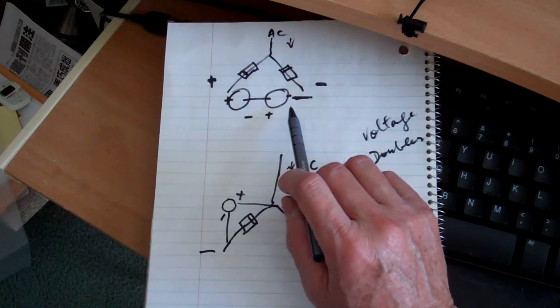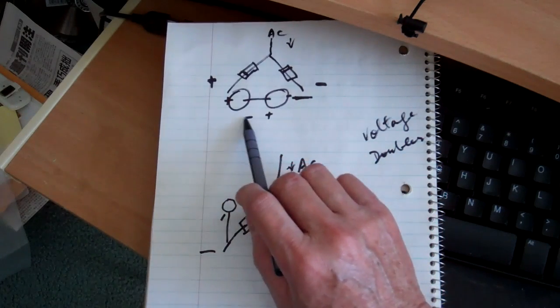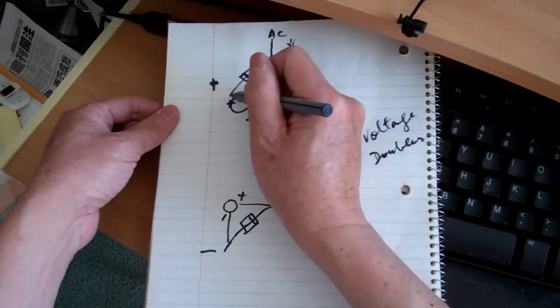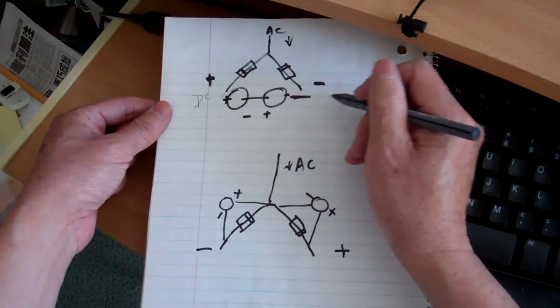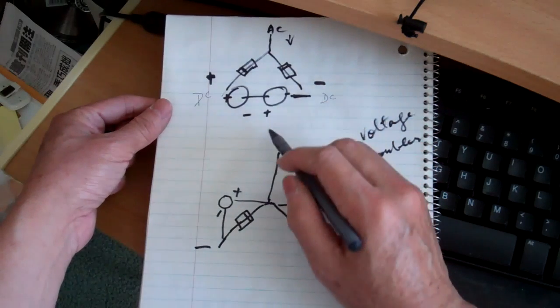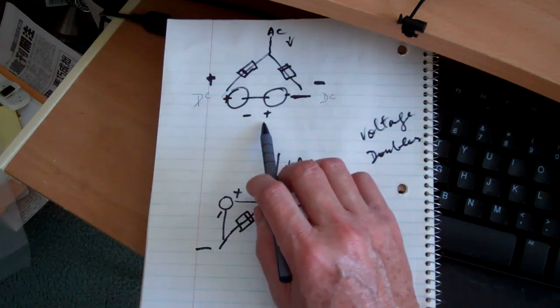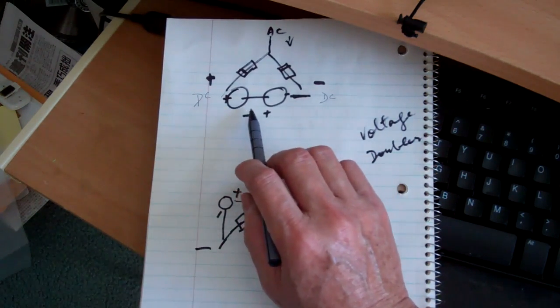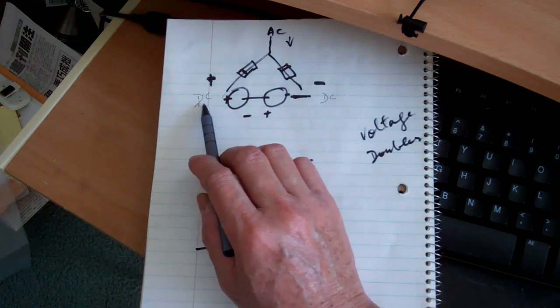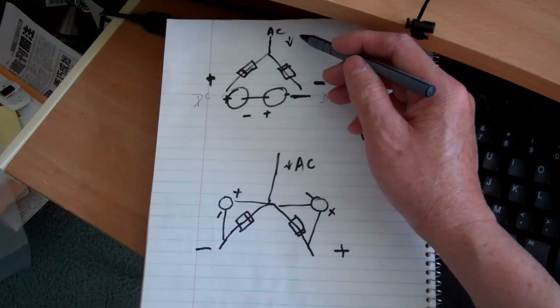They're put in series and then the positive to this capacitor here is linked with the DC positive and the negative here is linked with the DC negative. So you have positive here, negative here and this is connected in series positive to the negative of the other capacitor and then this is the DC positive side. This is where the AC comes in.